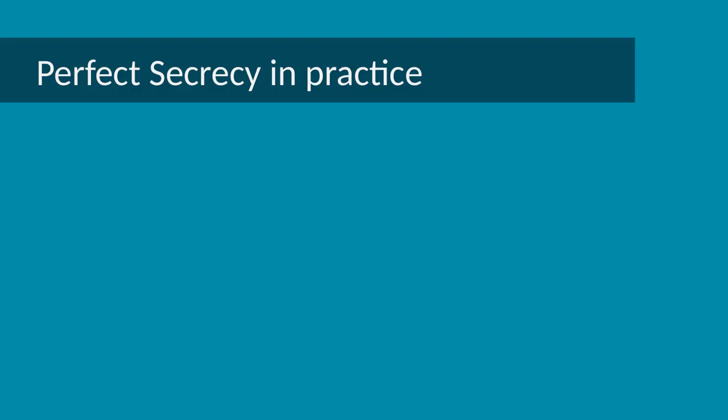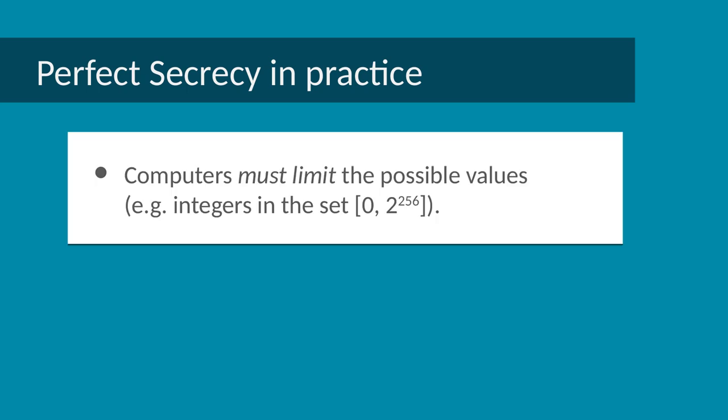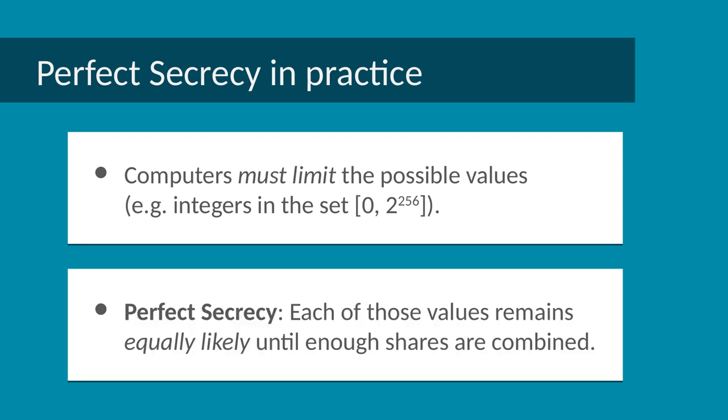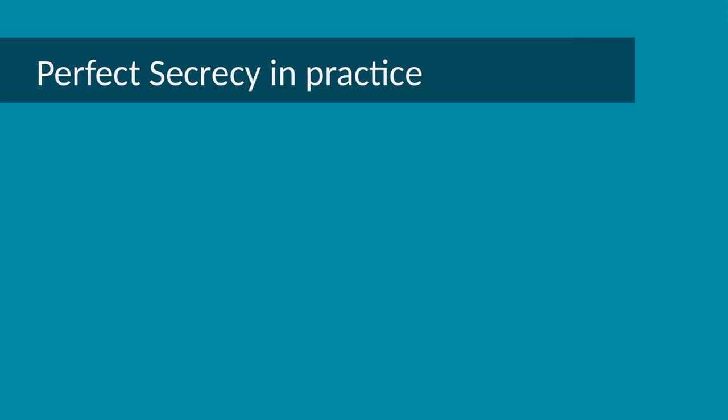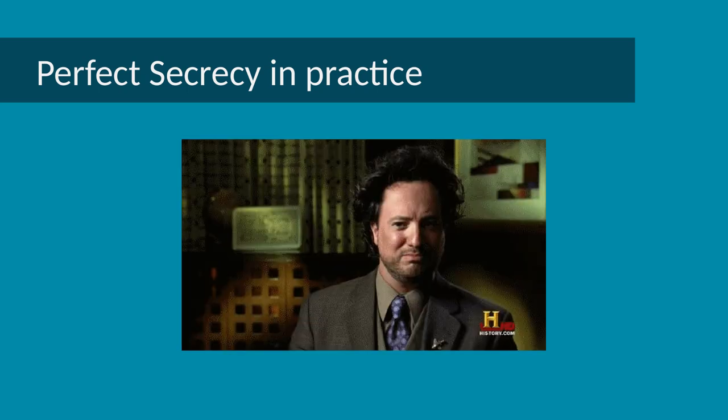So we arrive at the following problem. Computers must limit the possible values in our domain since they need to be represented in a limited amount of bytes. In that context, the best we can hope for as perfect secrecy is that each value in the limited set remains equally likely to be the secret until enough shares are combined. However, as our example showed, this is not easily achieved. So, perfect secrecy in practice - is such a thing even possible? Yes, it is.